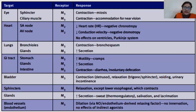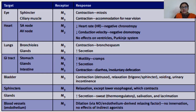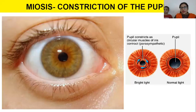Regarding blood vessels and the endothelium, muscarinic receptor activation produces vasodilation. It is noted that there is 'no innervation' — meaning nerves do not directly release neurotransmitters here. Instead, there is an indirect effect, which will be discussed further.